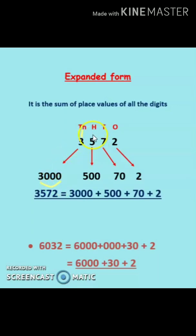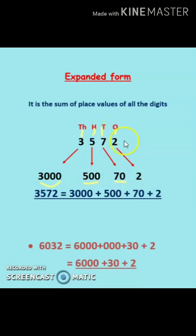Next is five. It is under the hundreds place, so the place value of five is five hundred. Next is seven. Seven is under the tens place, so I have written seventy. The next digit is two. It is under the ones place, so I have written two. The expanded form is the sum of all place values.